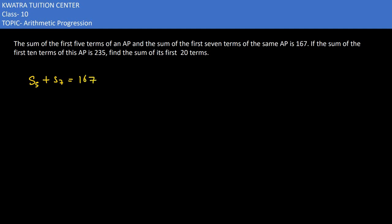Now how can we expand S5 with the help of the Sn formula? The Sn formula is n by 2, bracket 2a plus n minus 1 times d. Now here n is given as 5, so 5 by 2, bracket 2a plus, when you substitute n as 5, 5 minus 1 is 4d.